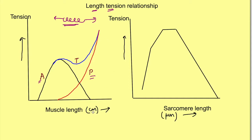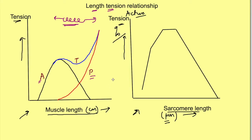In this slide we have two graphs. In the first graph, the x-axis represents muscle length in centimeters and the y-axis represents tension. In the second graph, the x-axis represents sarcomere length in micrometers and the y-axis represents tension. However, in this second graph we are referring only to active tension, which in books is represented as percentage tension. First, let's look at the first graph, focusing only on active tension.